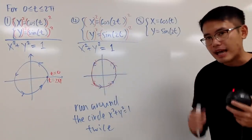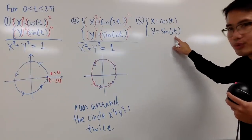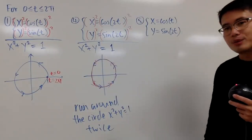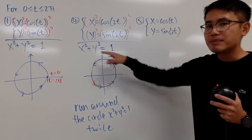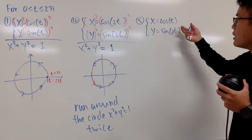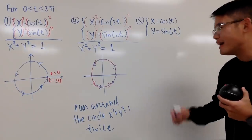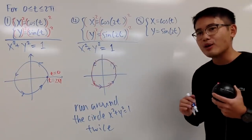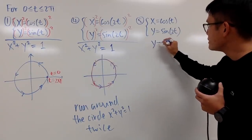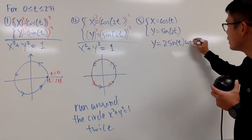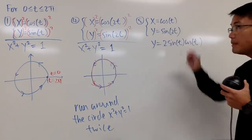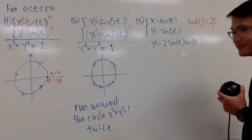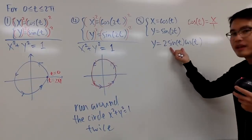The last example: x = cos(t) and y = sin(2t). Unfortunately the angles are different, so we don't get a circle. We can't simply square both sides because cos²(t) + sin²(2t) doesn't simplify nicely. Instead, we use the double angle identity: y = sin(2t) = 2sin(t)cos(t). Since cos(t) = x, we can write y = 2sin(t) · x.